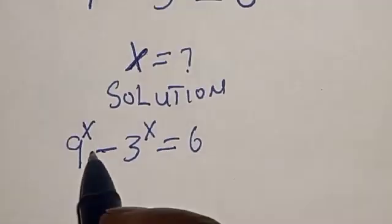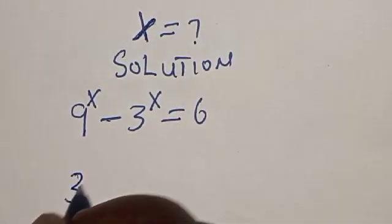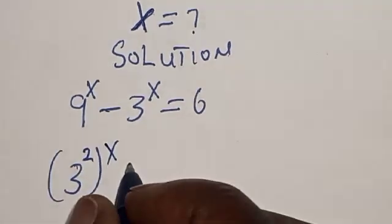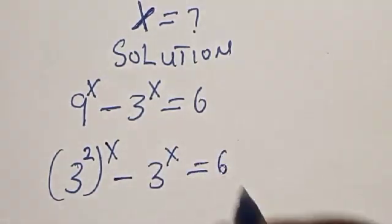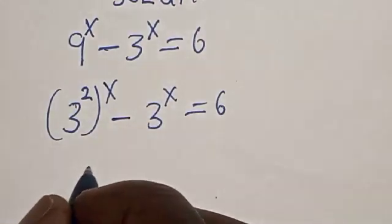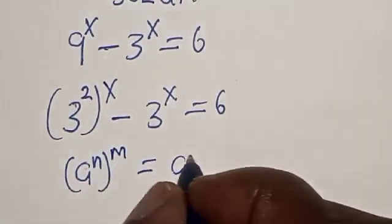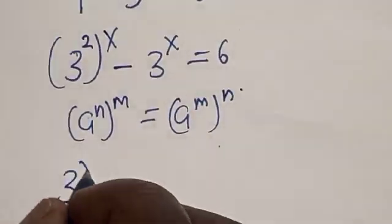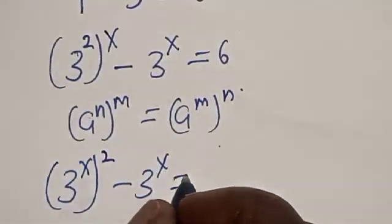We want to find the value of x from this equation. Now, 3 squared raised to power x minus 3 raised to power x is equal to 6. Note this identity: a raised to power n raised to power m is equal to a raised to power n times m. So we have 3 raised to power 2x minus 3 raised to power x is equal to 6.